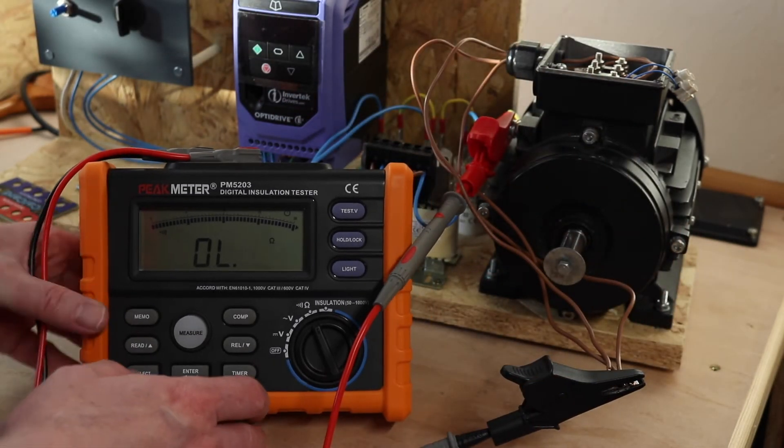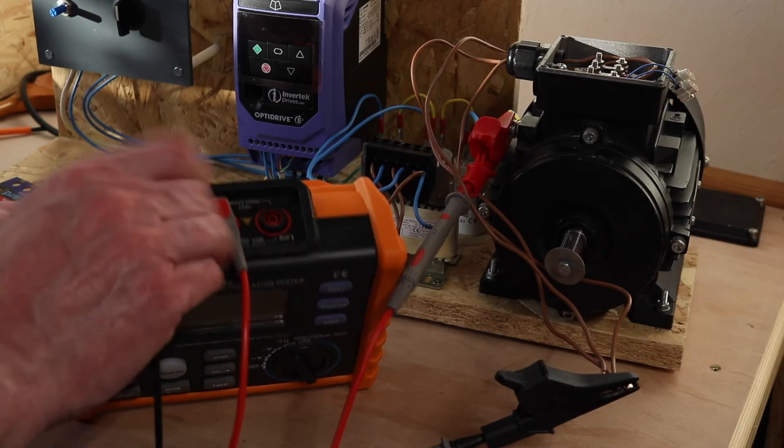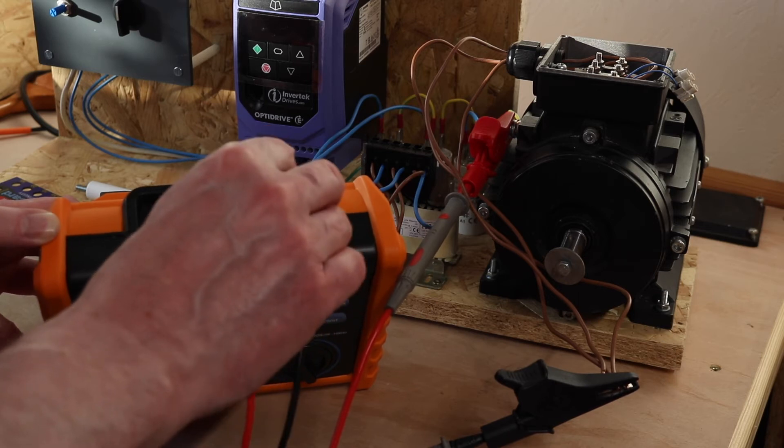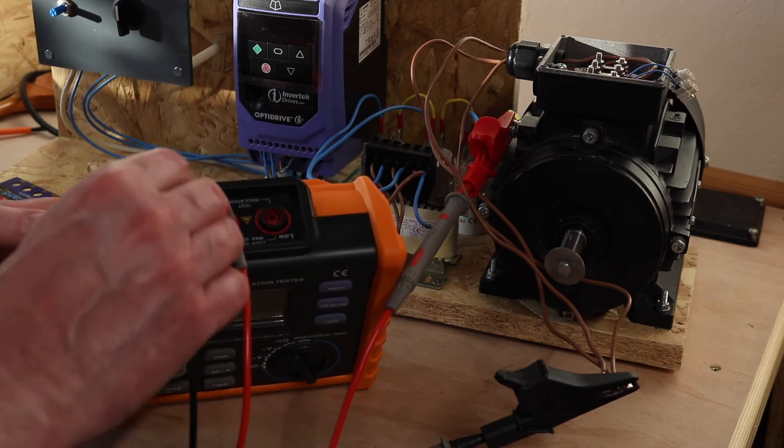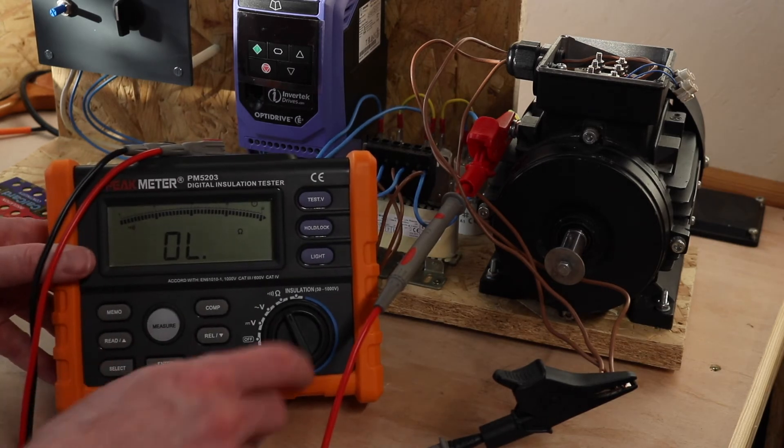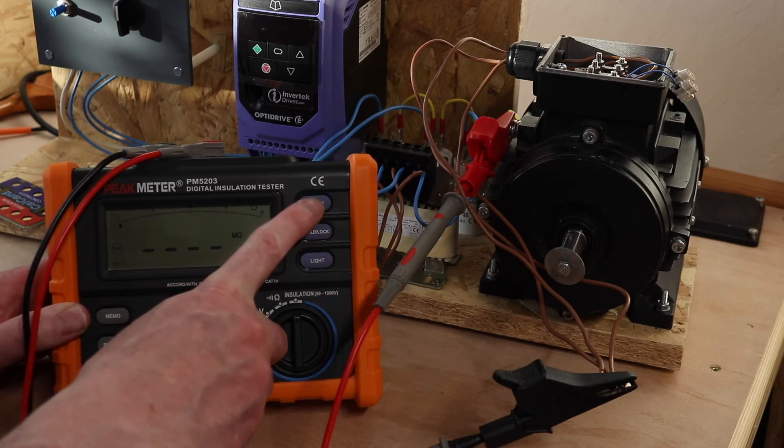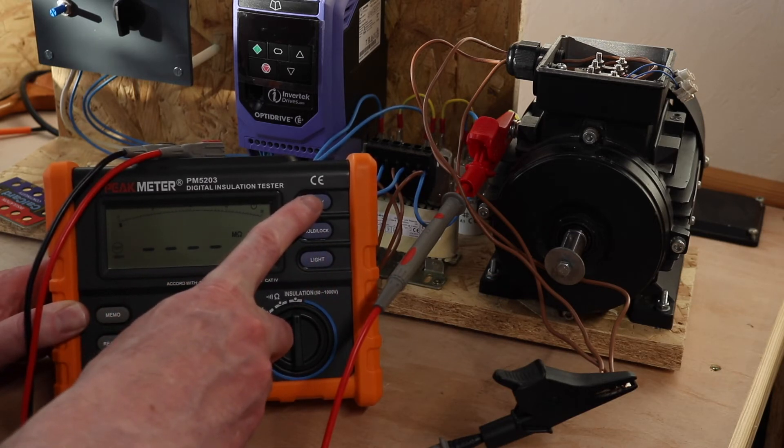For the instrument, I'm going to move the common terminal over to the second insulation test terminal. If you don't do that, you will get a completely open circuit reading, which I'll just show you now. Let's turn it around there.